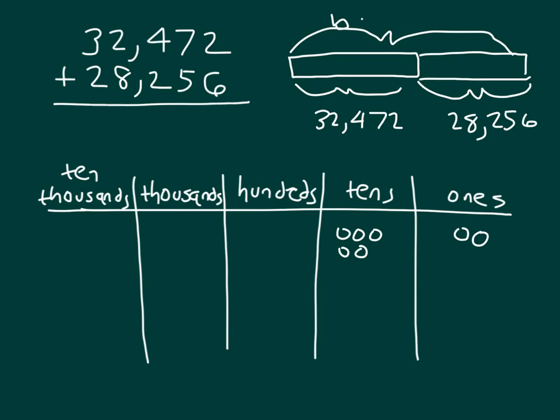Remember, we put the first number towards the top, and then we'll put the second number below. So there is that first number modeled. It breaks down into three ten-thousands, two thousands, four hundreds, seven tens, and two ones.